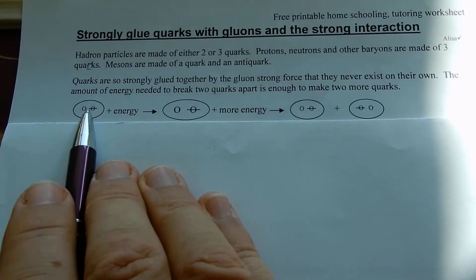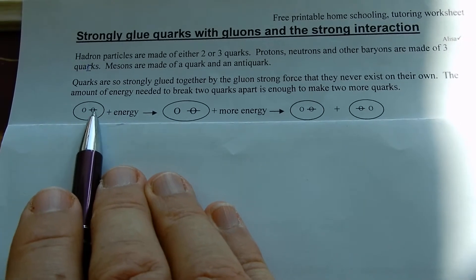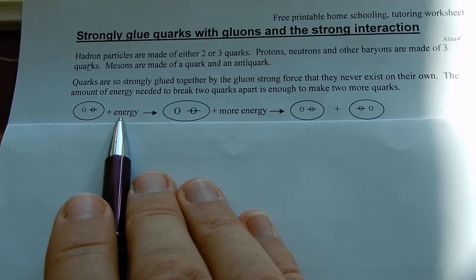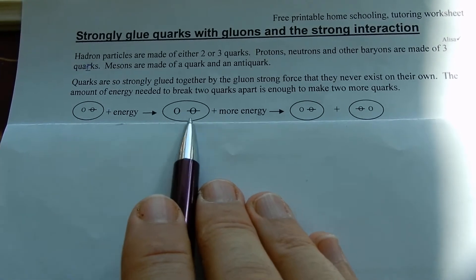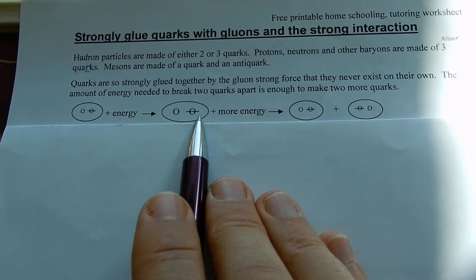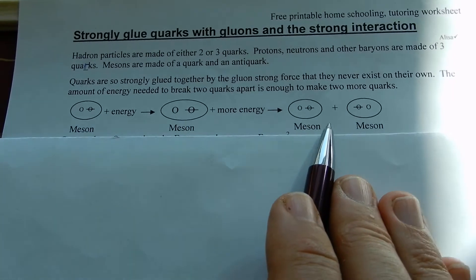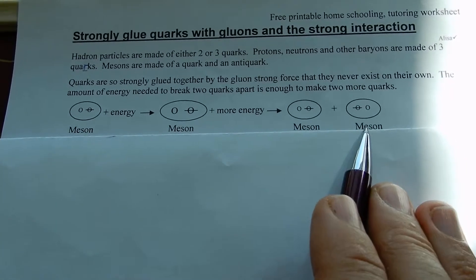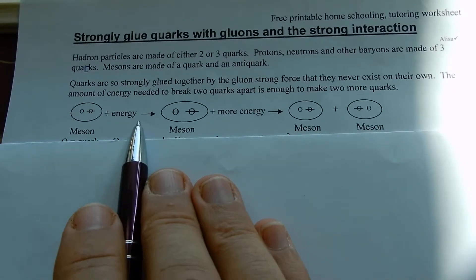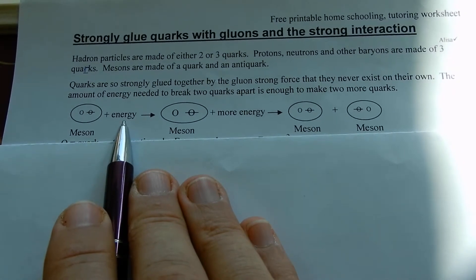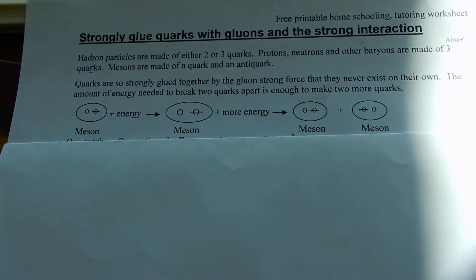So there's a meson with a particle and anti-particle. Add energy while they get further apart, add more energy and it falls apart — now you've got two mesons. E equals mc squared: you put enough energy in to make that amount of mass.